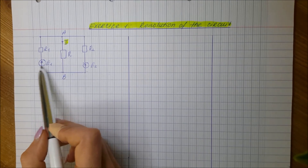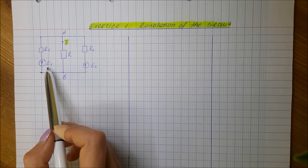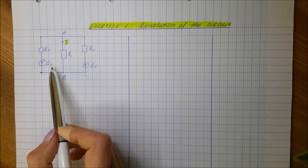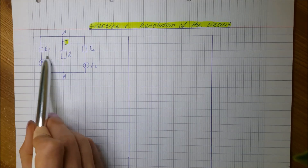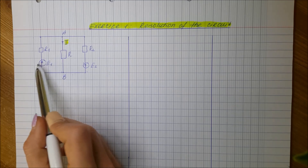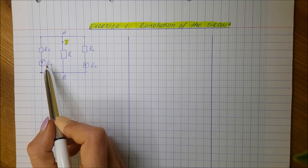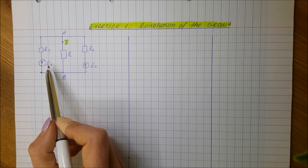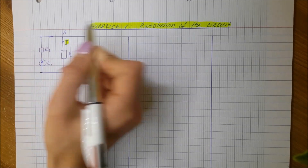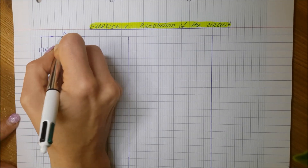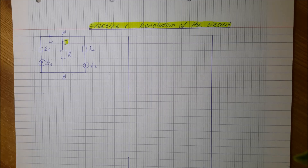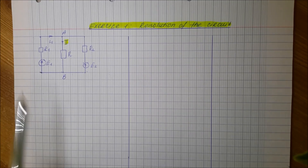We will start from the branch which contains the voltage source E1, and here we will use the generator convention. The voltage arrow is already predefined by the manufacturer as E1. In the generator convention, the current arrows must follow the voltage arrows. So I will choose the current arrow in this branch going to node A, and I will name this current I1. We have applied the generator convention for this branch.